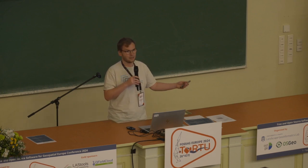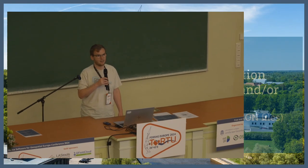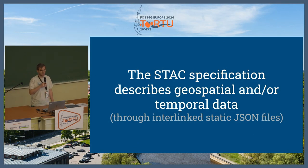So that's the long form of STAC, and it's a suite of specifications and software. The specifications are of two kinds: the static STAC spec and an API specification, and it has a lot of ecosystem around it. The STAC specification itself describes geospatial data, which usually also have a temporal component, and that is described through interlinked static JSON files — so you put them, for example, on a cloud bucket, and then there are just JSON files that link to each other, and in that way form a network that you can browse through.